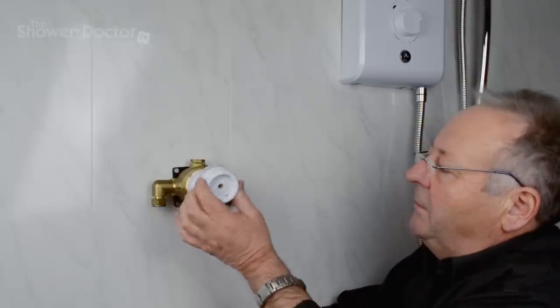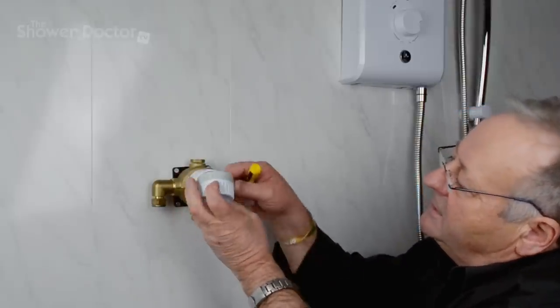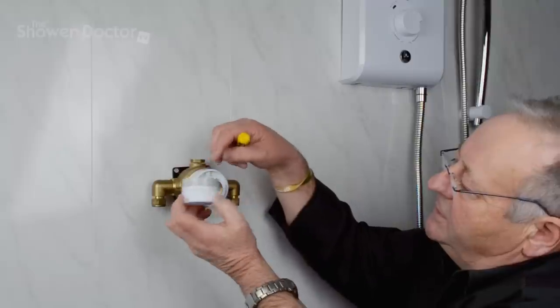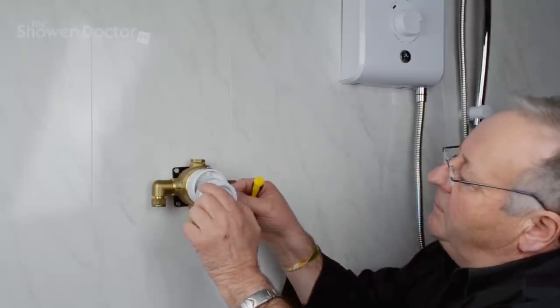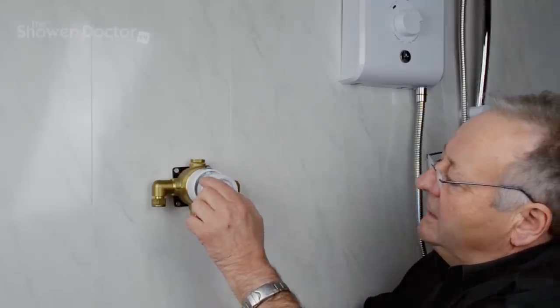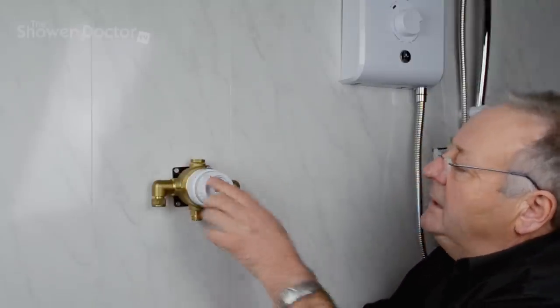it's adjusted is we remove the knob. The knob's marked from zero to nine. What we then do is pop the knob back on at about seven.